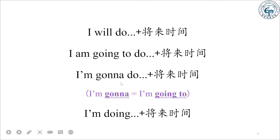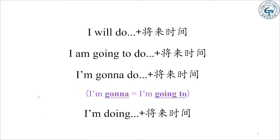谈未来呢,我们通常用这样几个句型。第一,"I will do something" 加将来时间。也可以用 "I'm going to do something"。I'm going 可以合起来说,说成 "I'm gonna"。I'm gonna do something。另外,"I'm doing something" 加将来时间——从形式上看是进行时态,但只要你加了将来时间,它可以表示将来。